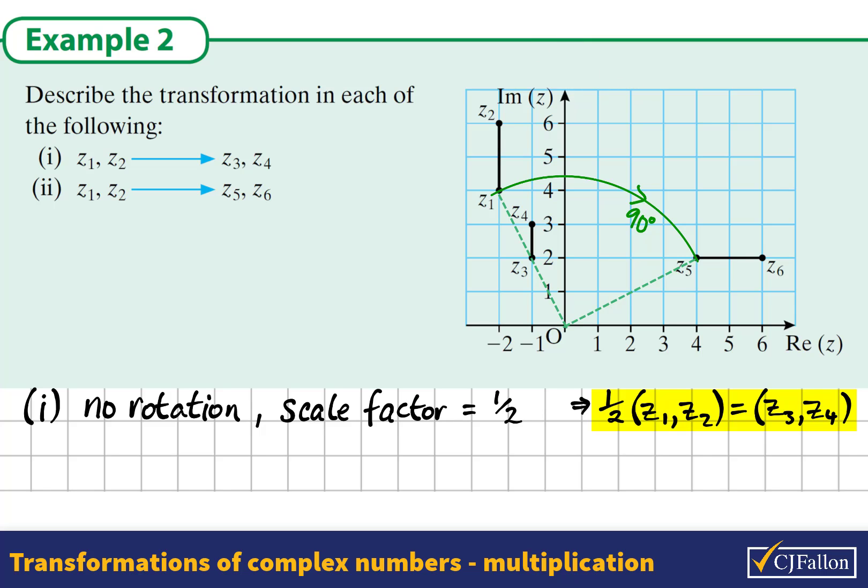Now let's also look at what would map Z2 onto Z6. Does it follow the same rule? We can see yes, it looks like a 90 degree angle. And we can see that the modulus of Z2 and Z6 are the same.